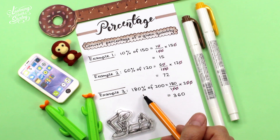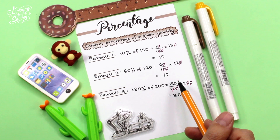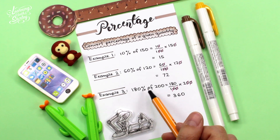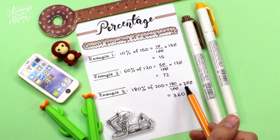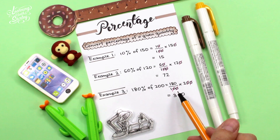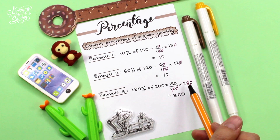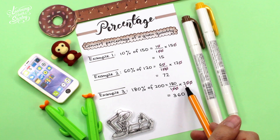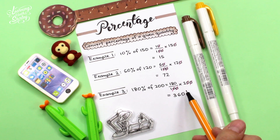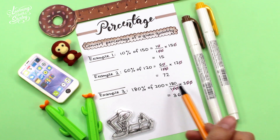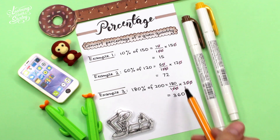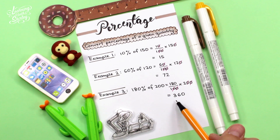Let's look at example three: 180% of 200. So 180% means 180 over 100, 'of' means times, so times 200. We cancel two zeros on top and two zeros at the bottom, so the answer is 180 times 2, which is 360.